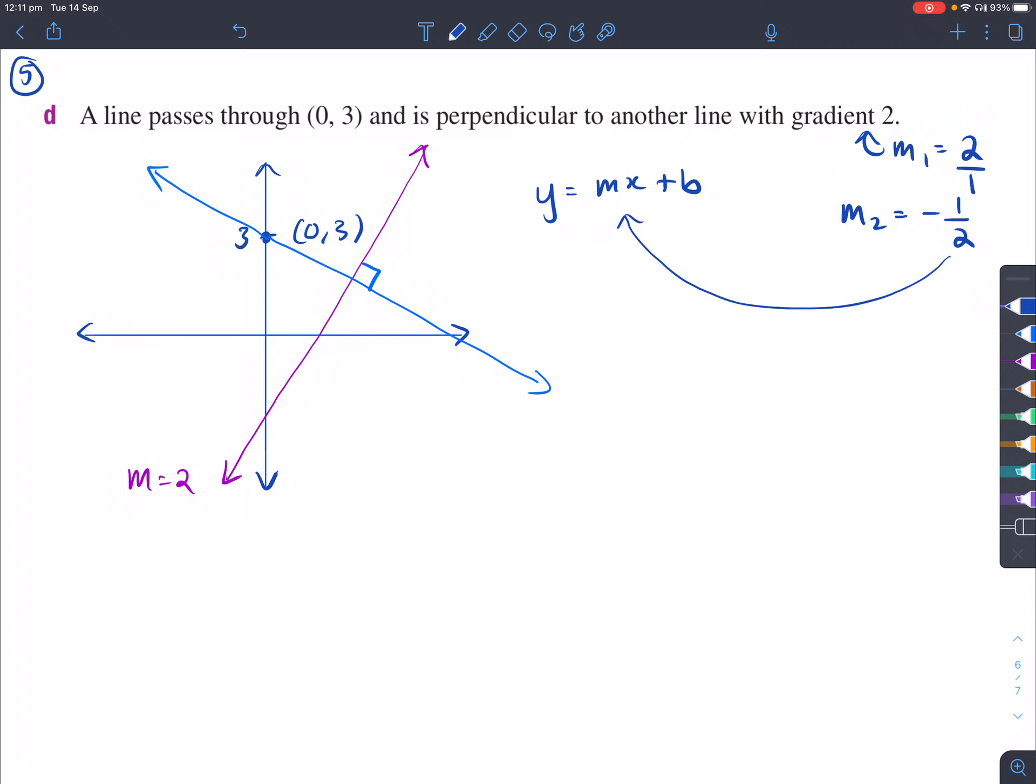We put that right there where m is, so that y would equal negative half x plus b. And what we're trying to find out is the y-intercept b. We do that by substituting in something to do with x and y, which is our coordinate here that passes through. So when y is 3, x is 0, so negative half times 0 disappears, so 3 is b. And what we can do is put that back into our equation right there, so that y equals negative half x plus 3.